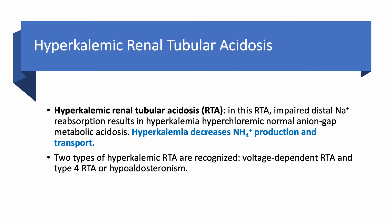The main two reasons for hyperkalemia are renal or adrenal. When talking about an adrenal cause, we're talking about aldosterone. Proximal RTA and distal RTA cause hypokalemia, while hyperkalemic renal tubular acidosis — as the name implies — causes hyperkalemia.